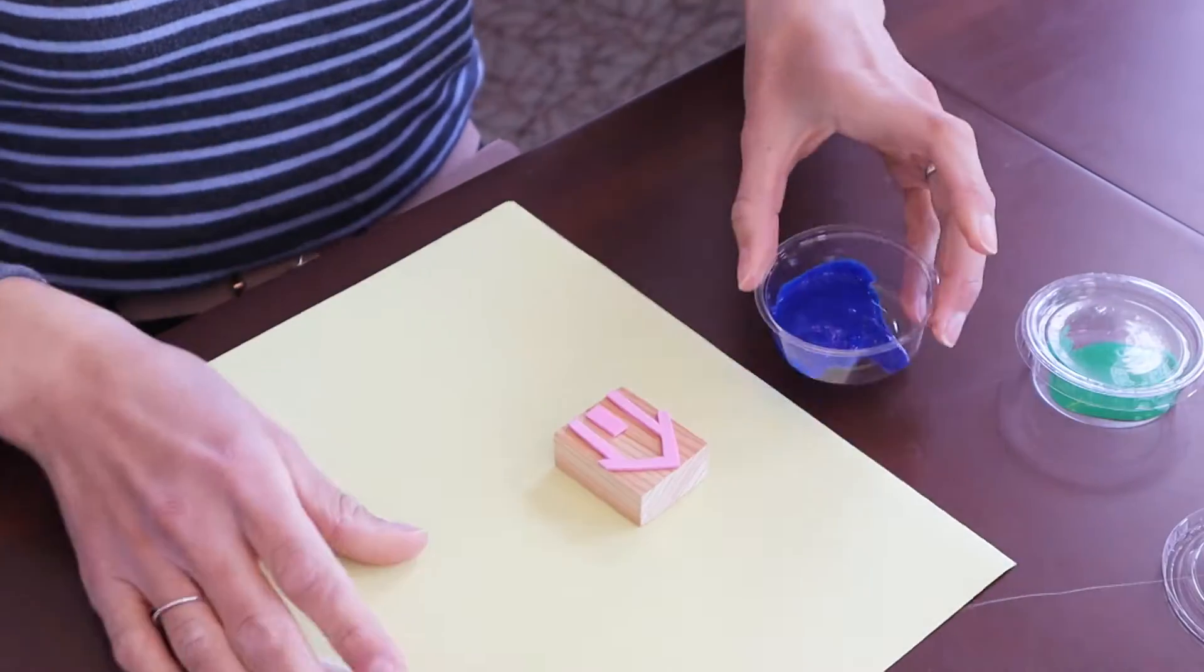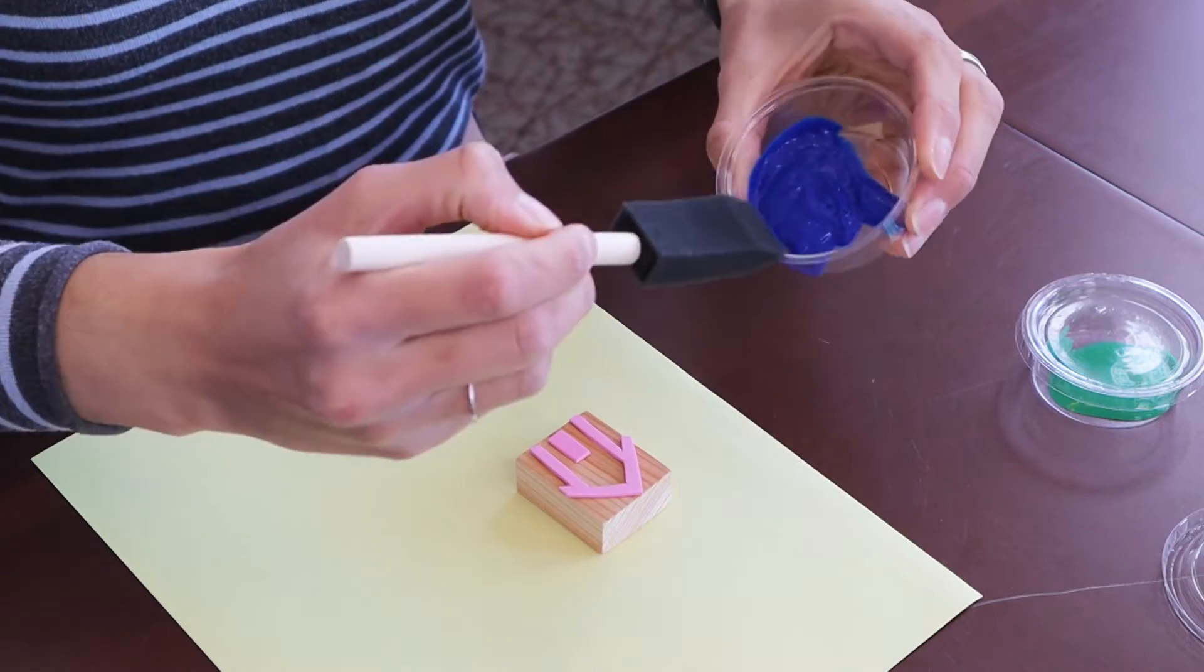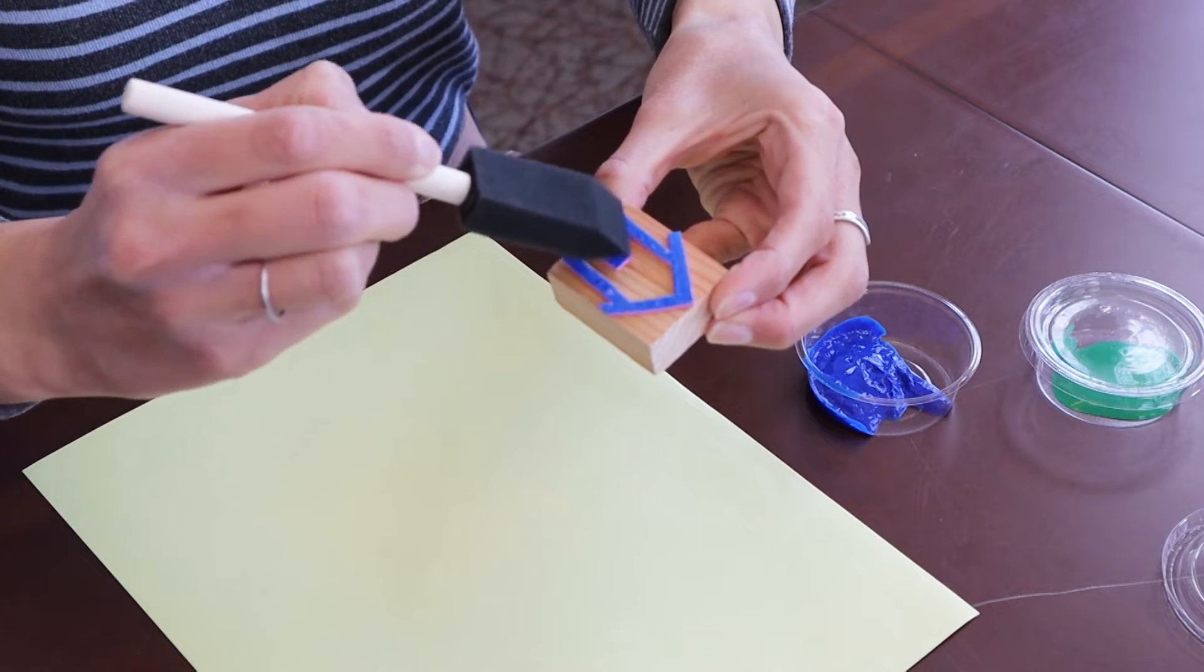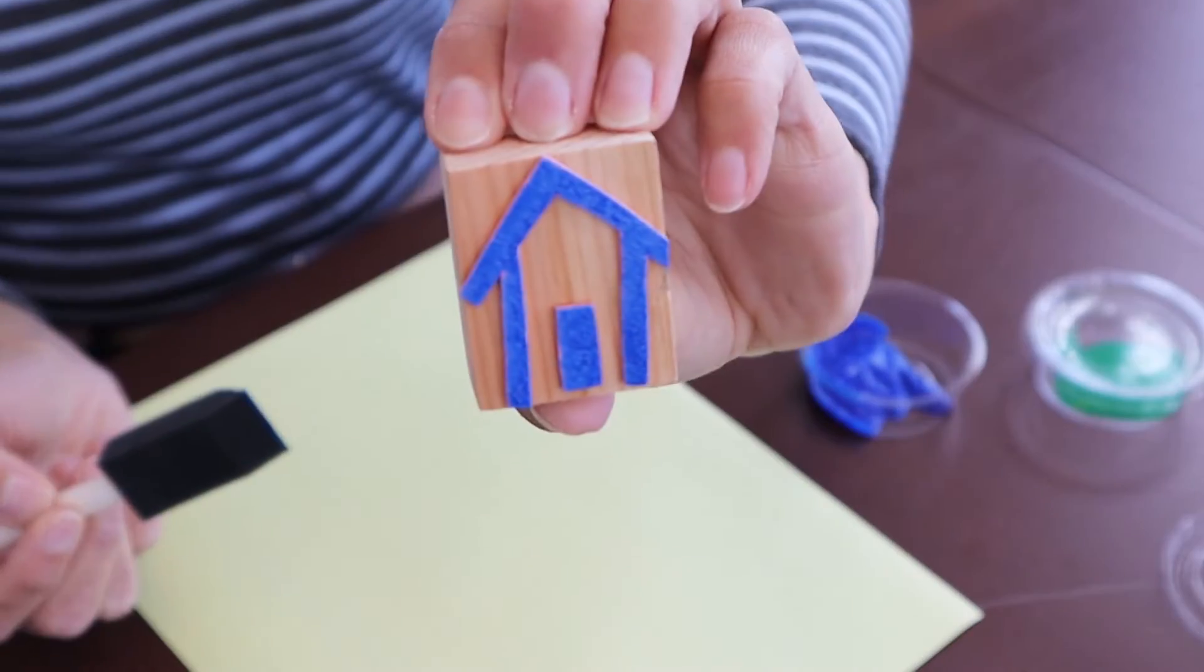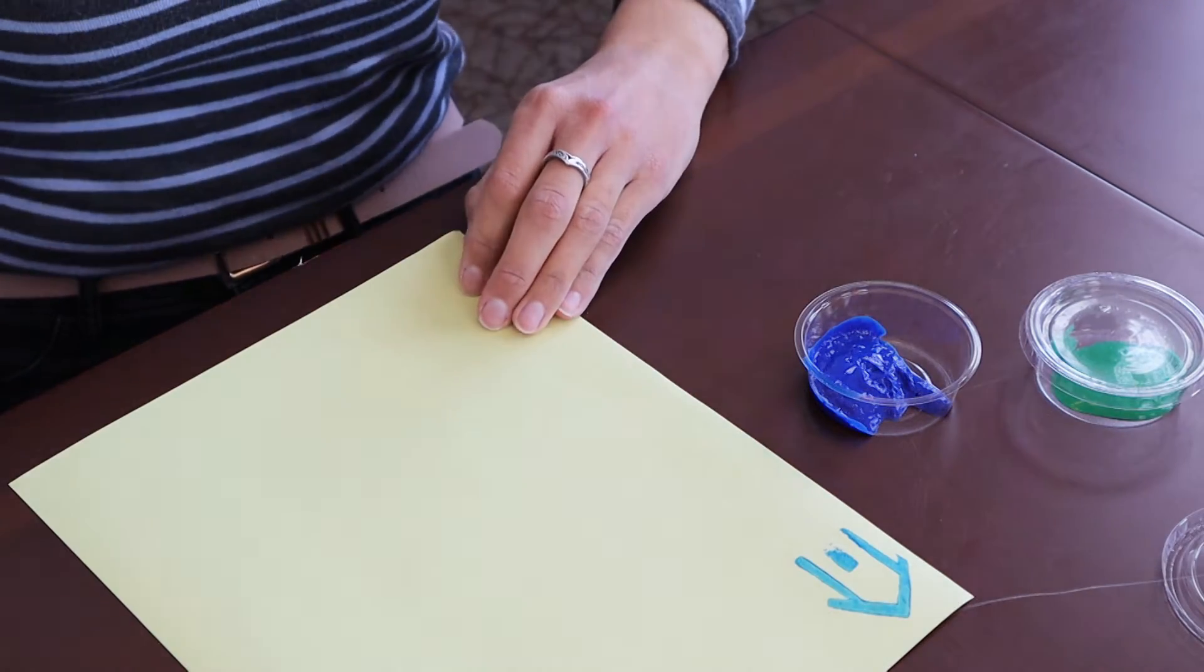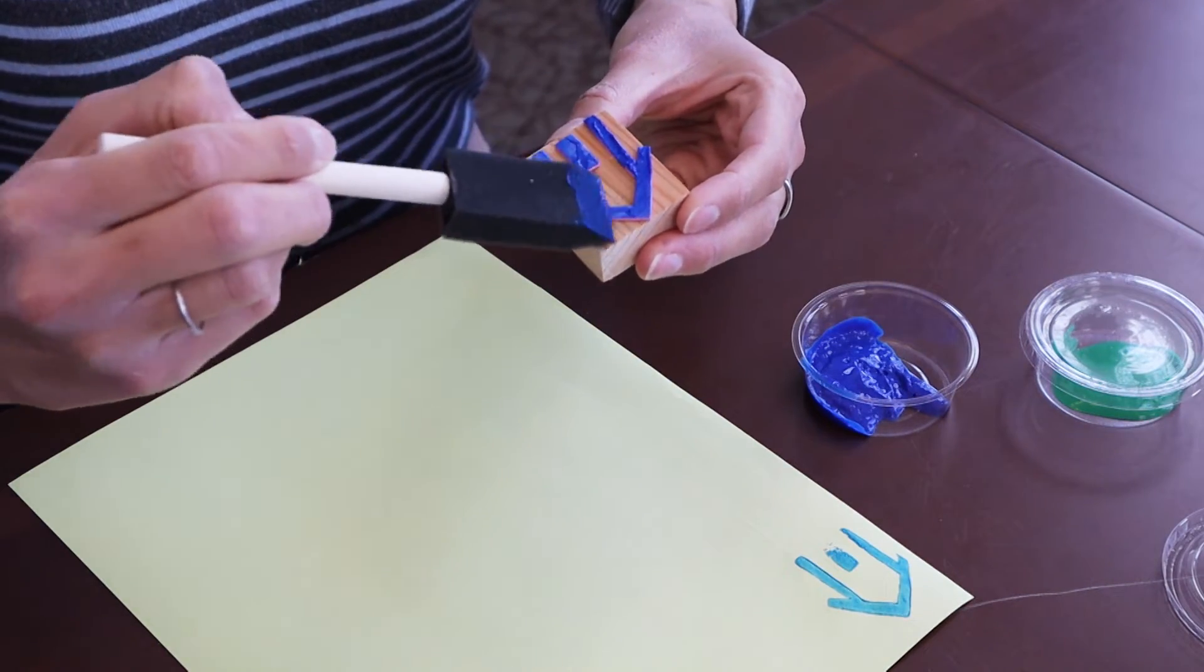Once the glue is dry, it's time to start stamping. Take the foam brush and lightly dab it into the paint, and then lightly dab your stamp. Now stamp it onto the paper. Keep dabbing paint onto your stamp as you need.